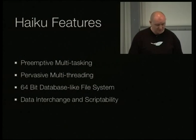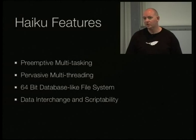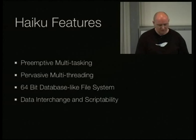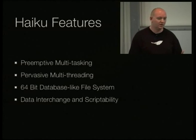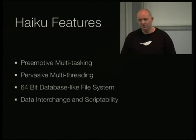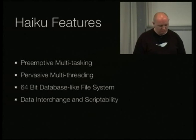Haiku includes a data interchange and scriptability format called B messages. This is a language-neutral protocol — essentially packets of information that can be sent from one application to another, or even from one window to another within an application. This means you can use any language like Python, Perl, Bash, or C++ to actually script a GUI application. All a GUI application has to do is add in hooks using a namespace, and then other scripts can take advantage of it. This is akin very much to something like AppleScript or Rex.